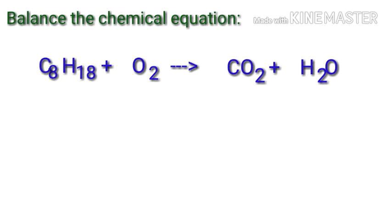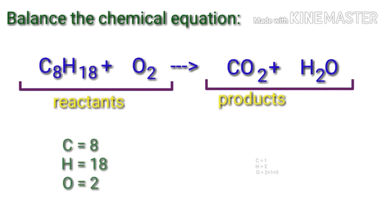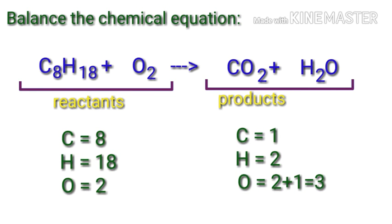Balance the chemical equation. Let's take a look at this equation representing a chemical reaction. In this equation, the reactants are octane and oxygen, and the products are carbon dioxide and water.